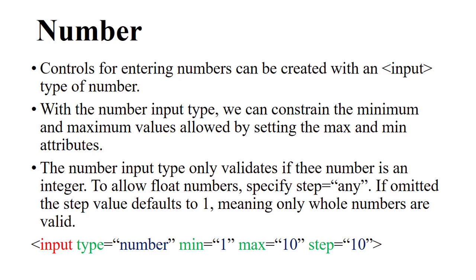The number field is a control for entering numbers and can be created with an input type of 'number'. With the number input type, we can constrain the minimum and maximum values allowed by setting the max and min attributes. The number input only validates if the number is an integer. To allow float numbers, specify step equals 'any'.